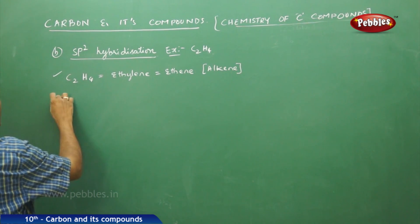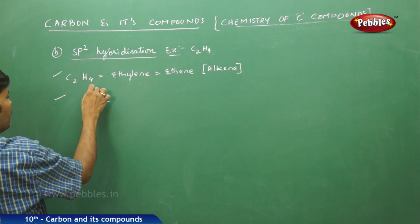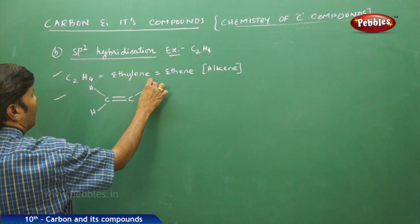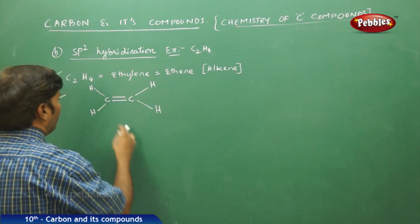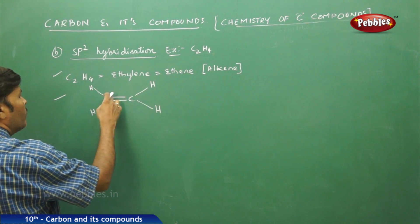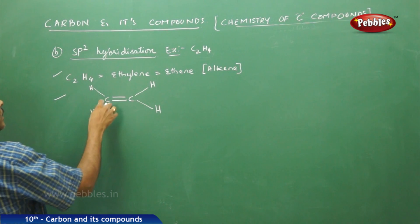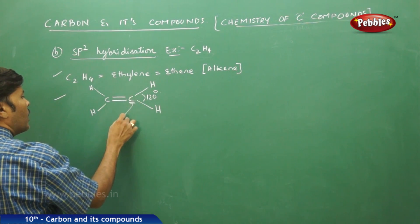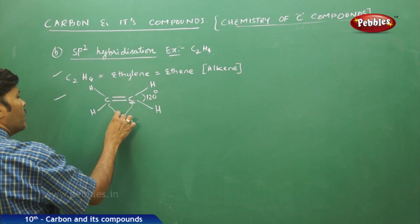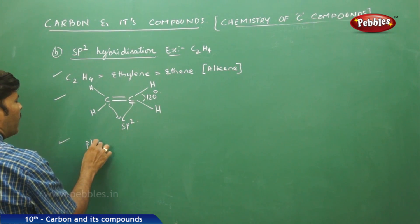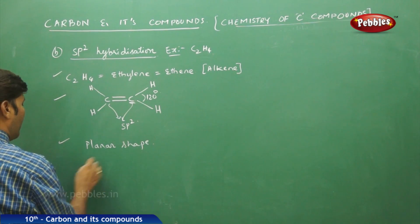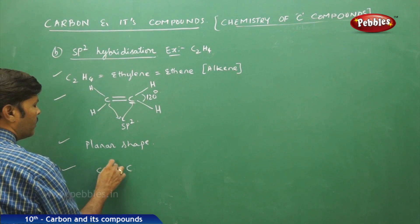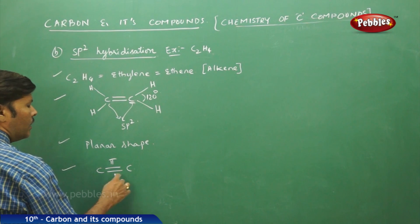If you go to the structural formula of ethylene, it has four carbon-hydrogen bonds. The bond angle for each carbon-hydrogen bond is 120 degrees. Each carbon undergoes sp2 hybridization, and the shape of the molecule is planar.